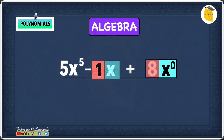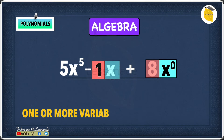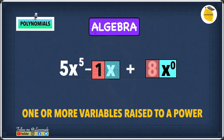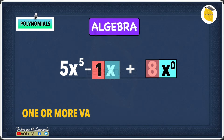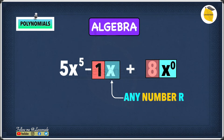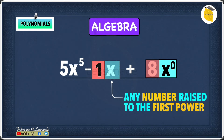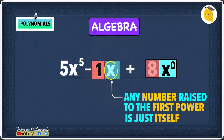We're still missing something with the 1x. We know that a variable is one or more variables raised to a power, and 1x is not shown being raised to a power. But any number raised to the first power is just itself. So we actually have x to the power of 1 — we just can't see the 1. We don't have to show the 1 because it doesn't change the value.